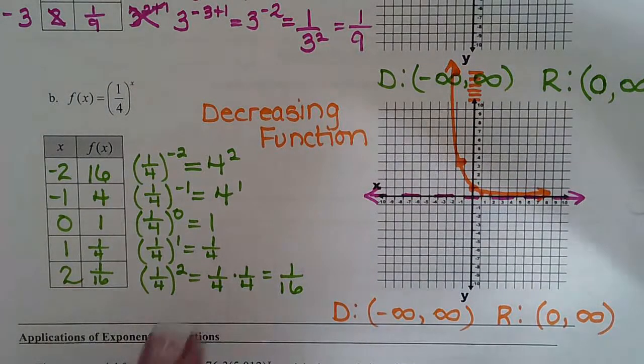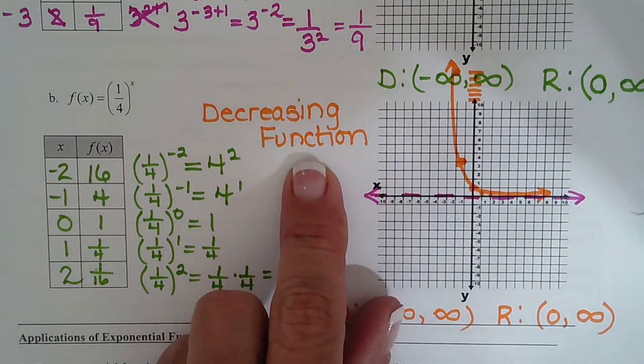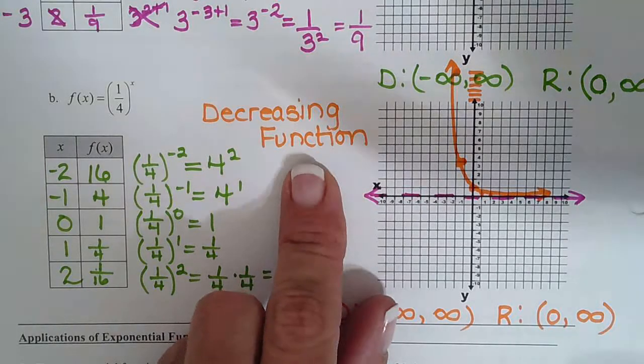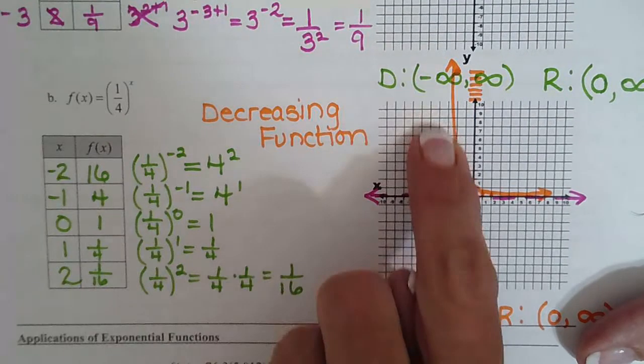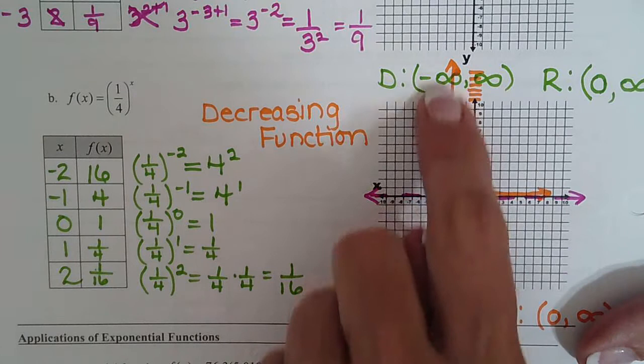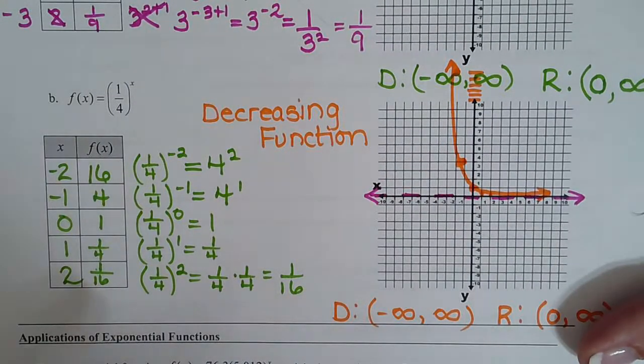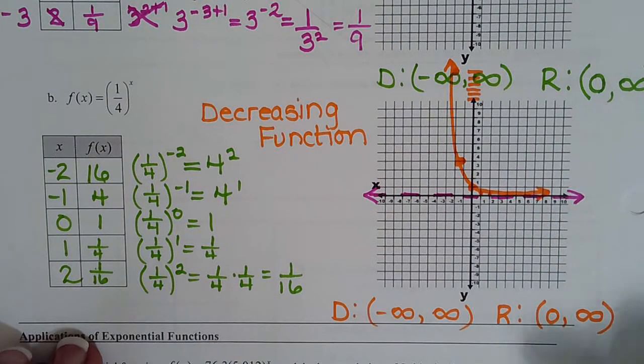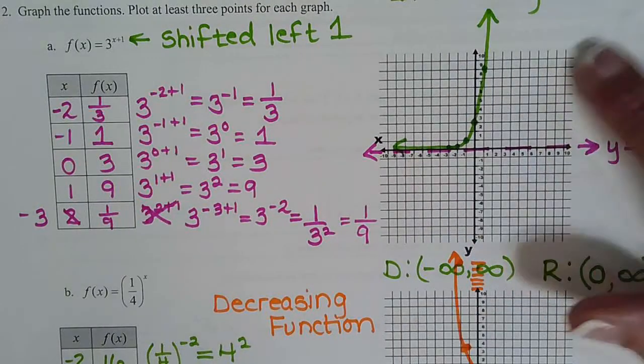I noticed when I was looking at my notes, I forgot to have you guys write decreasing function right there because the function is going down from left to right, decreasing. So remember that's exponential decay, where this one's exponential growth.